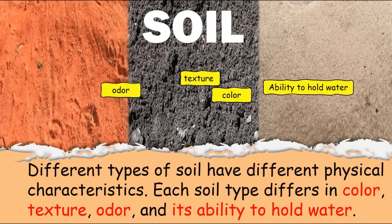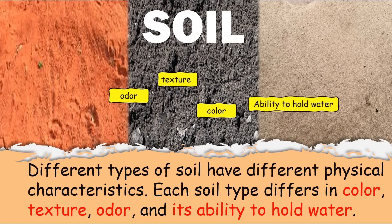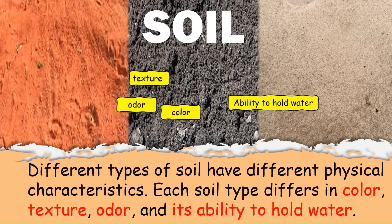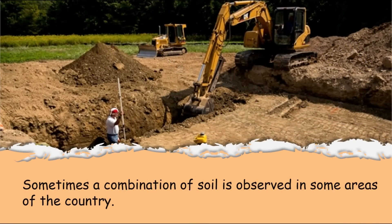Different types of soil have different physical characteristics. Soil type differs in colors, texture, odor, and its ability to hold water. Some soils are good for planting while others are not. The presence of different kinds of vegetative plants in a place is evidence of good quality of soil in the area or locality. Sometimes a combination of soil is observed in some areas of the country.